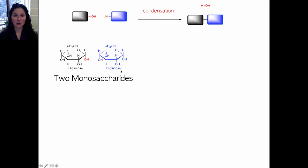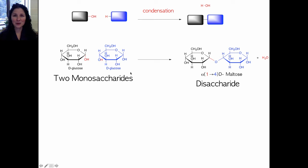The word condensation means that you are forming or removing water from the molecules. This is the example in your activity. Two monosaccharides can undergo a condensation reaction. We are going to remove the alcohol on the anomeric carbon of one sugar and remove a hydrogen from an alcohol group on the other sugar. You form a new bond between this oxygen and this anomeric carbon, shown here in red because it is important.